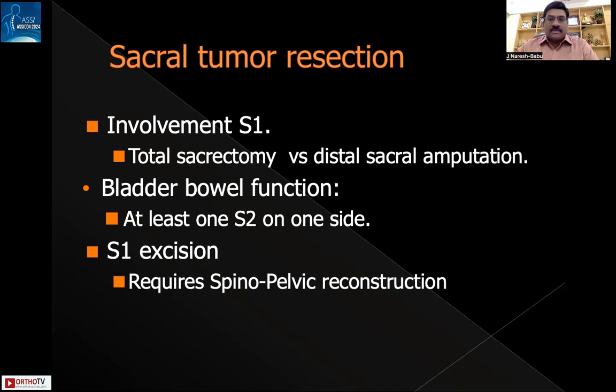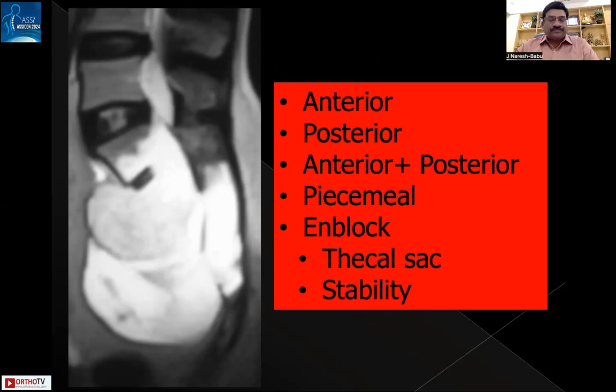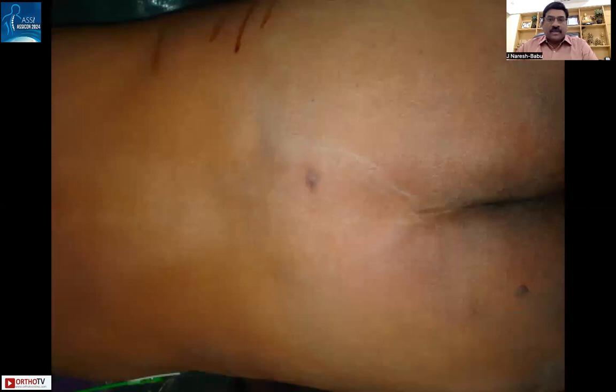Once S1 is accessed, spino-pelvic reconstruction is mandated. Different surgical options are available: anterior tumor resection, posterior resection, or most commonly a combined anterior and posterior approach. Piecemeal excision is out of the question for cure — it may relieve neurological compression but permanent cure requires en-bloc excision. The challenge of en-bloc excision is the thecal sac, which must be ligated and cut to remove the sacrum en bloc.